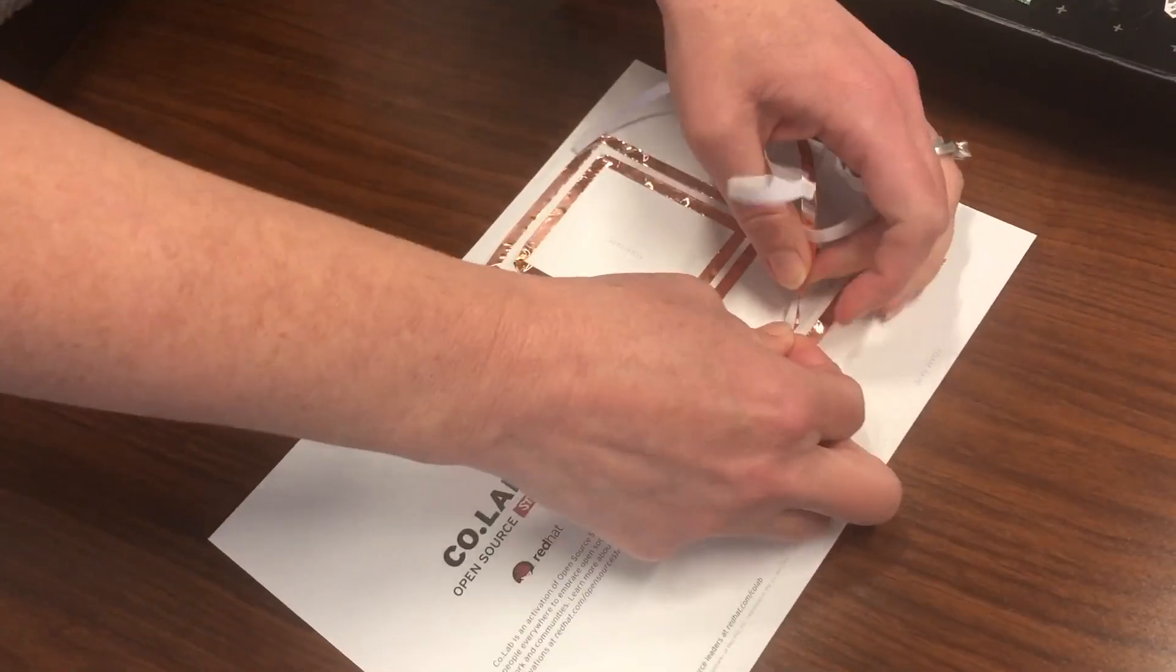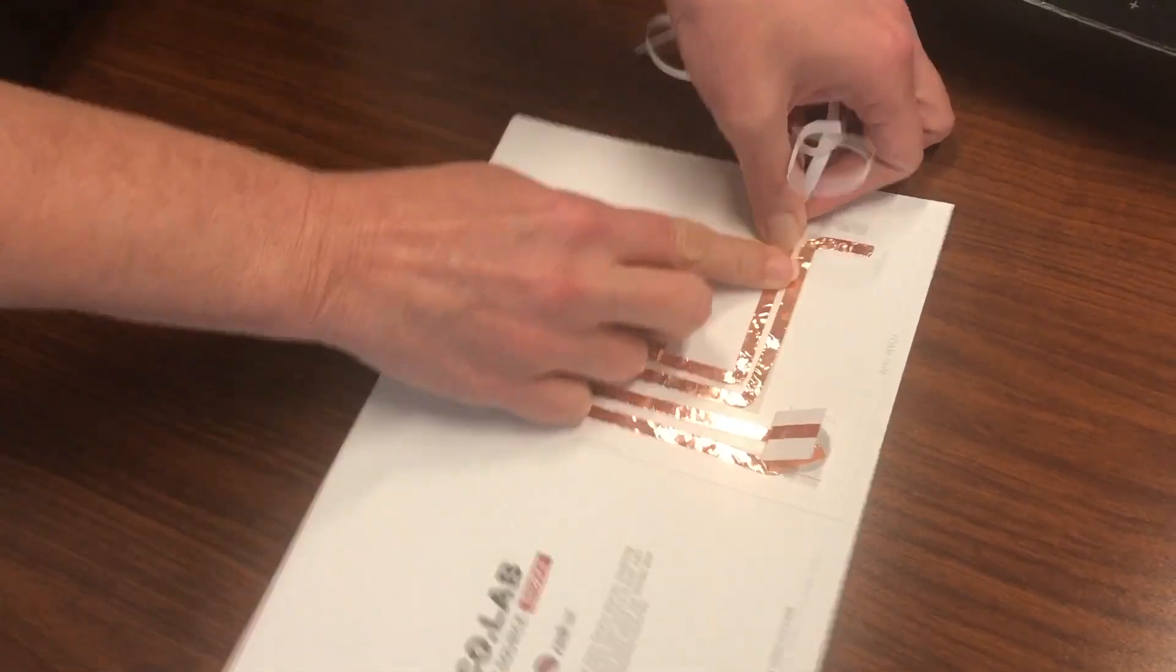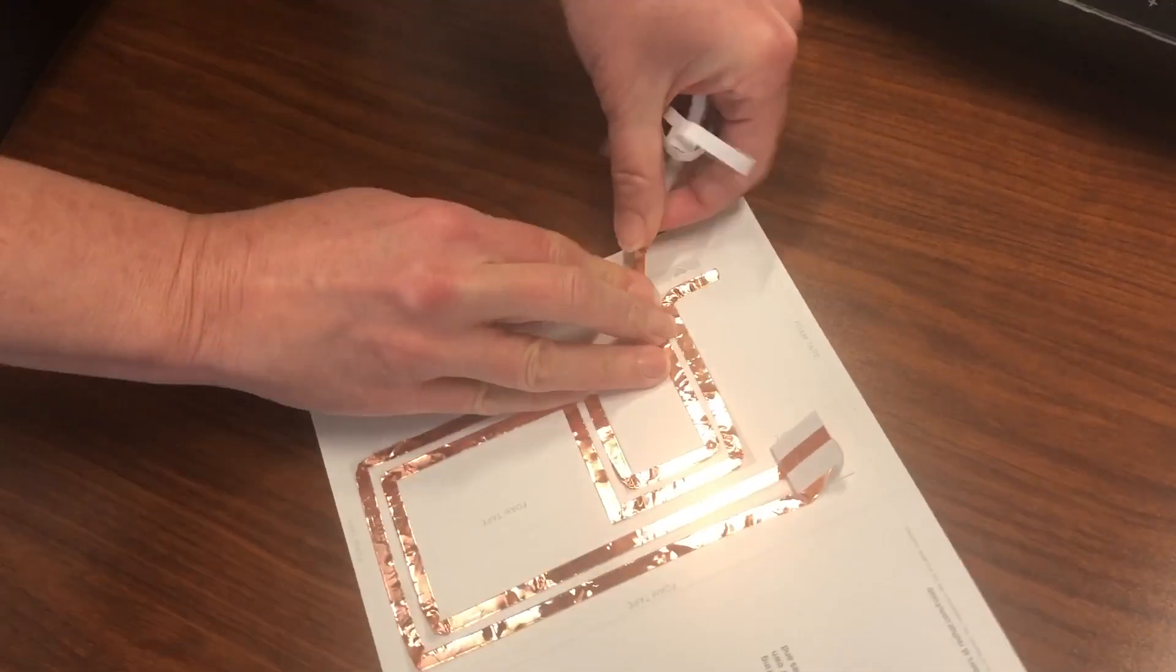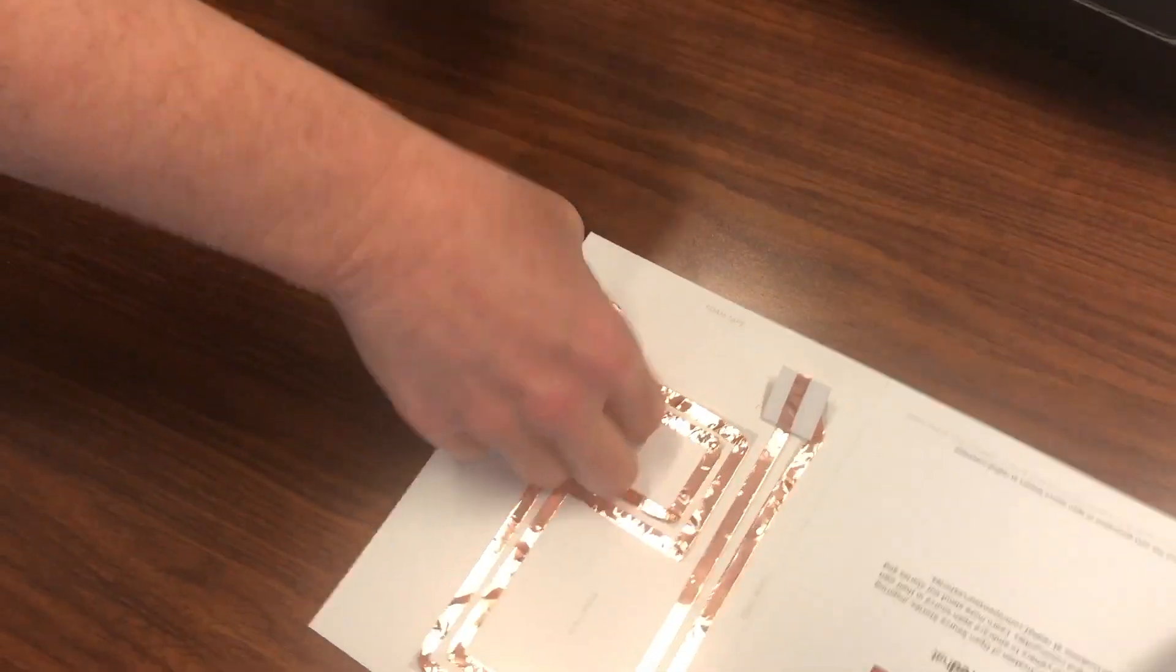We're almost at the end of our negative line. Again, making sure that my LEDs are going to touch both sides of the copper tape. And again, just tear it right off.